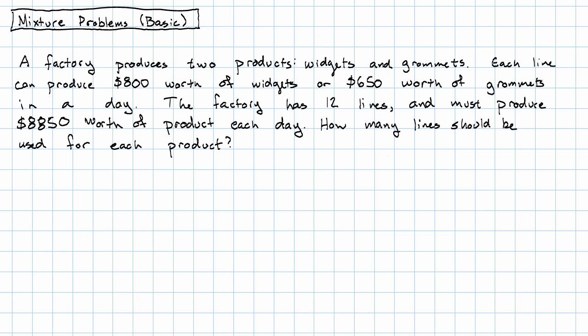Suppose a factory produces two products, widgets and grommets. Each line can produce $800 worth of widgets or $650 worth of grommets in a day. The factory has 12 lines and must produce $8,850 worth of product each day. How many lines should be used for each product?